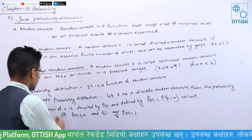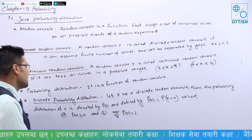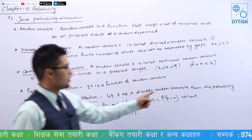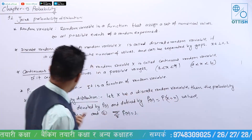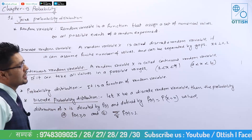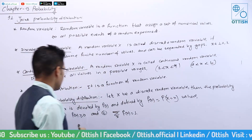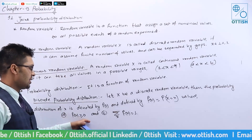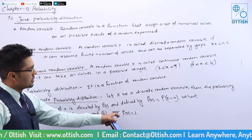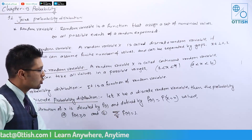This covers the discrete probability distribution. To summarize: let X be the discrete random variable, then the probability distribution of X is denoted by f(x) and defined as f(x) = P(X = x), where f(x) ≥ 0 and the summation of f(x) equals 1 — that is, total probability is 1.